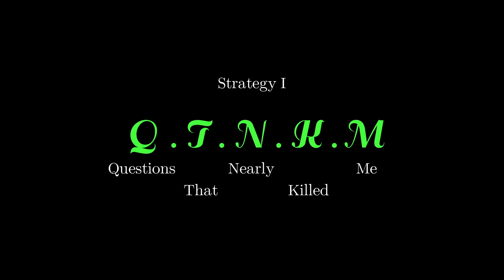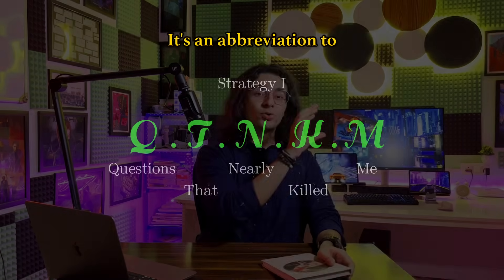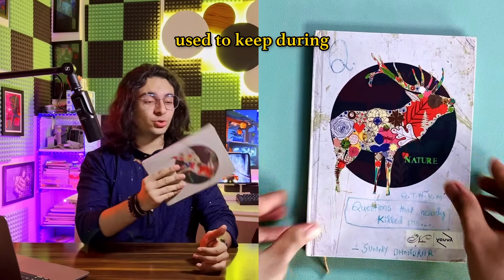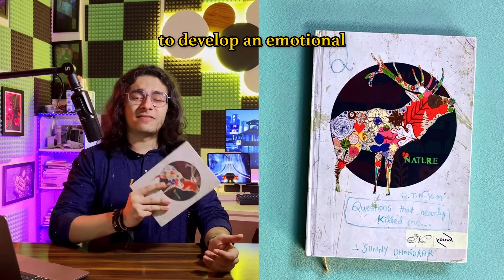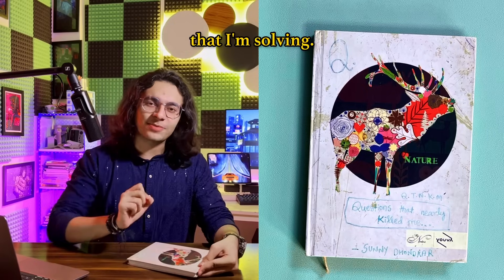Strategy Number 1: QTNKM. It's an abbreviation to questions that nearly killed me. It's a diary that I used to keep during my competitive exams preparation. I built this concept to develop an emotional corner for the questions that I am solving.